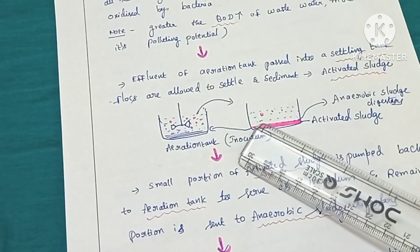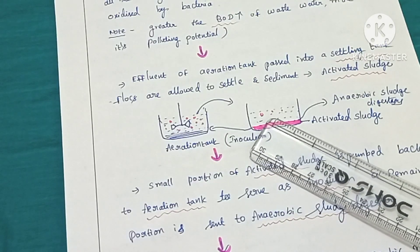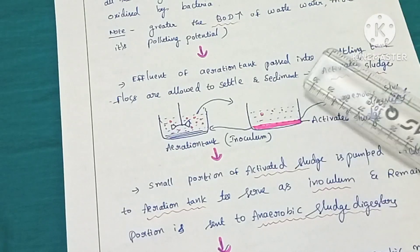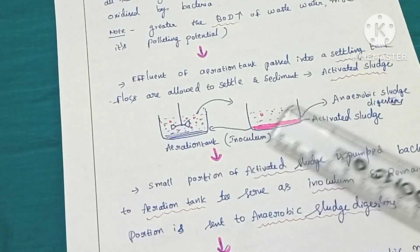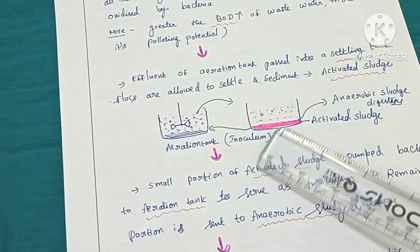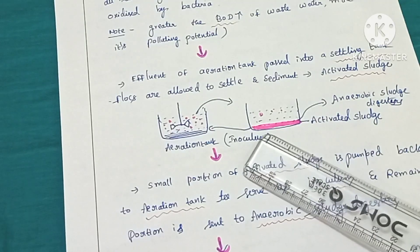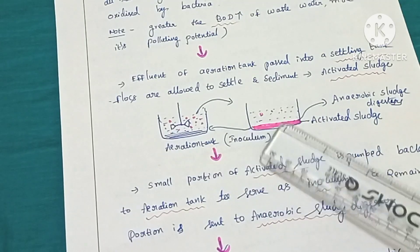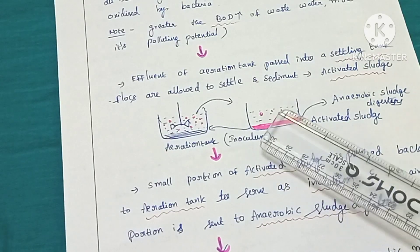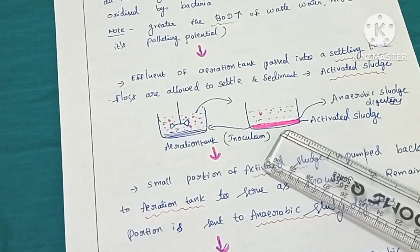After the aeration process, the water is taken into a settling tank and kept undisturbed for several hours. Whatever flocs, floating debris, and turbid matter present in the water get settled at the bottom. The clear liquid at the top is called effluent. The solid matter at the bottom of the settling tank is called activated sludge, which consists of bacterial-fungal flocs and organic matter.